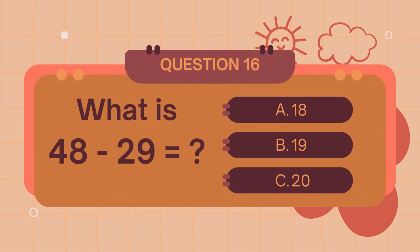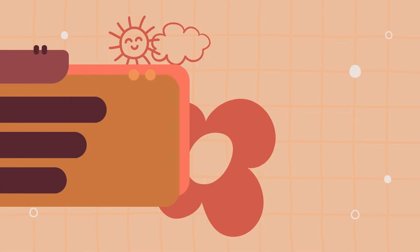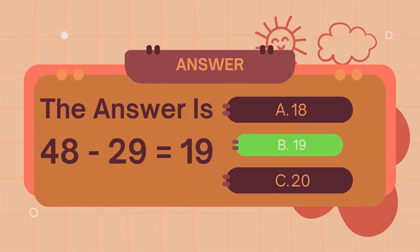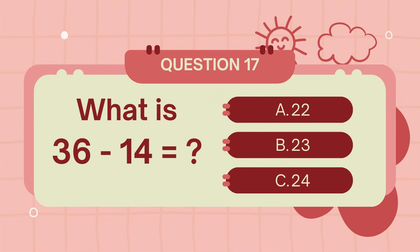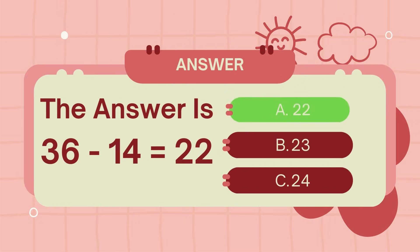What is 48 minus 29? The answer is 19. What is 36 minus 14? The answer is 22.